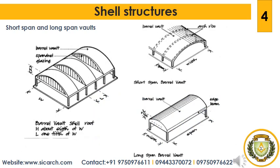Short span barrel vaults are those in which the span is shorter than its width, used for the width of the arch ribs between which the barrel vault spans. Long span barrel vaults are those in which the span is larger than its width. The strength of the structure lies at right angles to the curvature, and the span is longitudinal to the curvature. The usual span of the longitudinal barrel vault is from 12 to 30 meters, with its width being half the span and the rise being one fifth of the width.